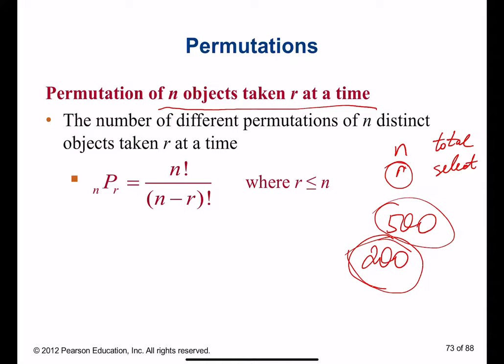For cases like this when you have to select r amount of elements among n total elements and you want to know in how many combinations you can make it out of these selected elements, we use this formula. The permutation of r selected elements out of n is equal to n factorial over n minus r factorial, where r is less than n. Of course, because r is selected from n, so r is always going to be less than n.